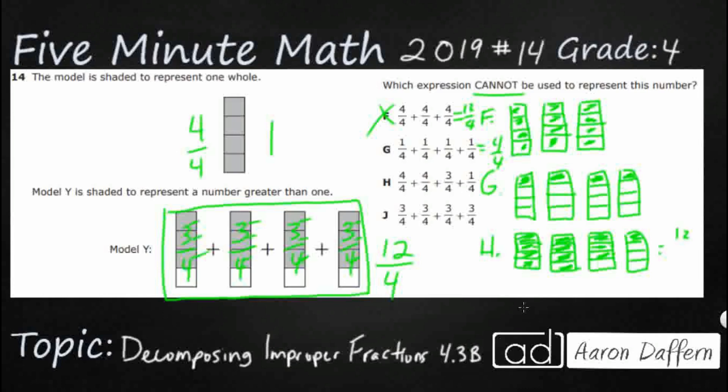This equals 12 fourths. So you notice this is very similar. Take a look at H and F. The first two parts are the same, 4 fourths and 4 fourths. F takes this 4 fourths and they just break it down into 3 fourths and 1 fourth. So F is incorrect. H is incorrect. I'm assuming J is incorrect. Let's hope so.